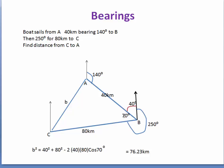Now that we know the enclosed angle at B is 70 degrees and have both adjacent sides, we use the cosine rule: b squared equals a squared plus c squared minus 2ac cos B. This becomes b squared equals 40 squared plus 80 squared minus 2 times 40 times 80 times cos 70, which gives a distance of 76.23 kilometres.